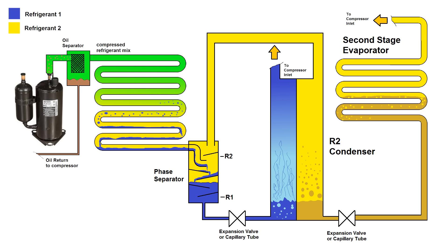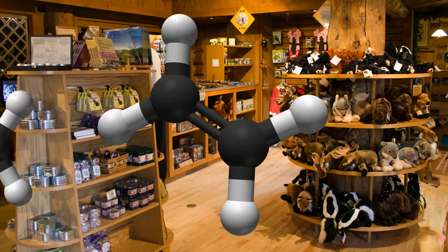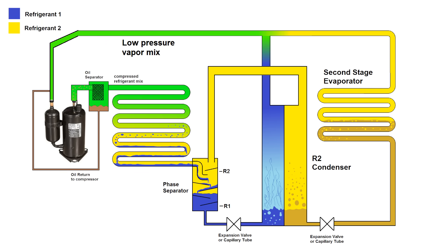After that, refrigerant two exits the evaporator through the gift shop, then returns to the compressor inlet. Now in some schematics, I've seen them add a check valve on the return line, which I guess is to prevent one refrigerant from backfeeding into another one's evaporator, but I don't actually think this is necessary and mine ran just fine without it. So that's how an autocascade cycle works.